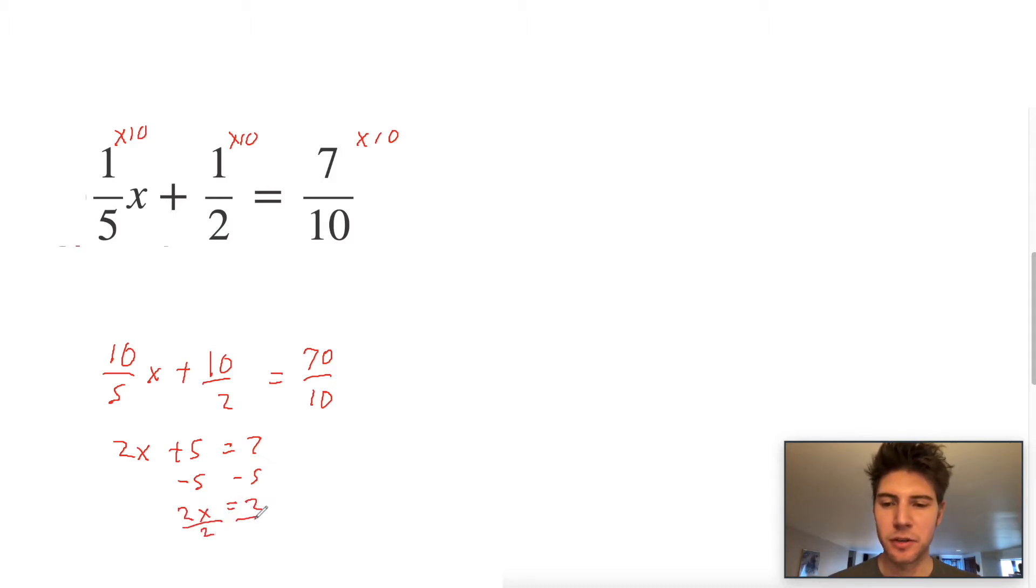And now we can solve this by subtracting 5 from both sides and then dividing both sides by 2, and we get x equals 1. So I went through that pretty quickly. Let's look at it again. What happened? We saw some denominators that we did not like.